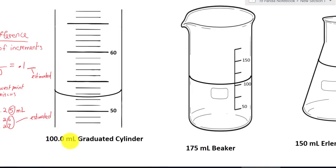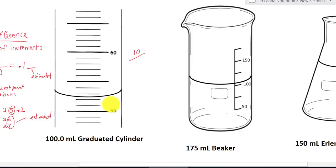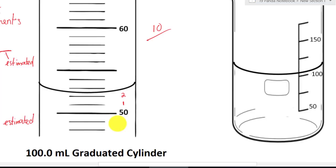Next is a 100-milliliter graduated cylinder. Using the same formula: the difference divided by the number of increments. Sixty minus fifty gives you ten. Counting increments from fifty to sixty — one through ten — gives ten increments. So ten divided by ten equals one.